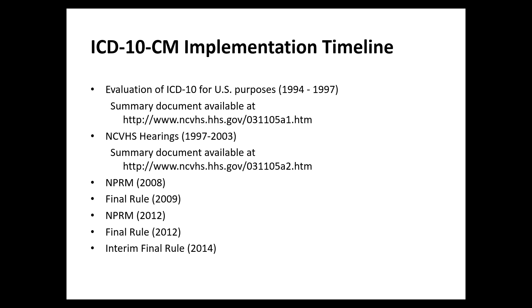ICD-10-CM implementation timeline: this gives you the view of what happened in the U.S. that ultimately got us to implementing ICD-10-CM and PCS on October 1, 2015. The evaluation of ICD-10 for U.S. purposes occurred between 1994 and 1997. The National Committee held hearings between 1997 and 2003, ultimately issuing a letter of recommendation to the Secretary to move forward with adoption of the two code sets. Then you see the history after 2003 with the first NPRM published, subsequent NPRMs, final rules, and interim rules — culminating in an October 1, 2015 implementation date.